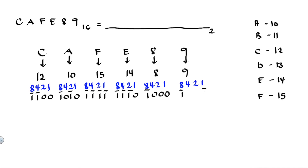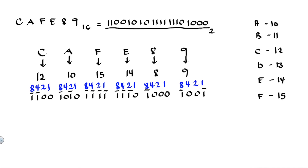9 is the sum of 8 and 1, so those are 1's, and we don't use 4 and 2, so those are 0's. 9 is equivalent to 1, 0, 0, 1 in binary. For our final answer, CAFE89 hex is equivalent to 1100 1010 1111 1110 1000 1001 in binary.